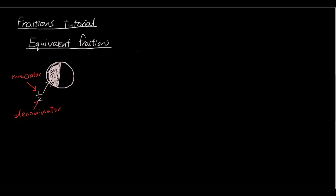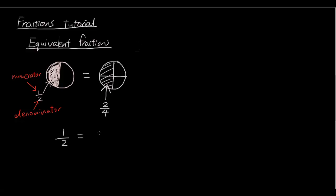Those are two terms you have to understand when you hear people talk about fractions. Now what happens if I have the same pizza and I divide it into four equivalent slices and I highlight two of them? This highlighted section can be represented as two over four — because we have divided the pizza into four equivalent slices and we are highlighting two of them. What you should notice is that both highlighted sections are the same size, which means one half is equal to two over four.